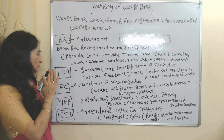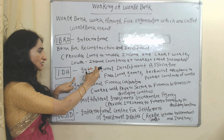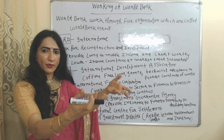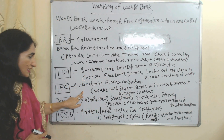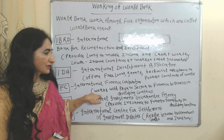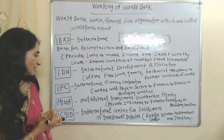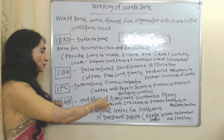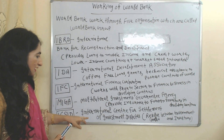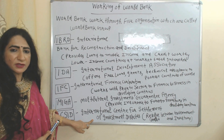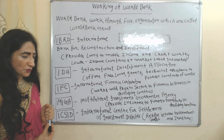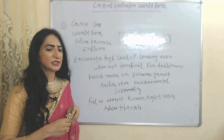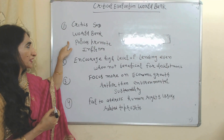Second is the International Development Association, which offers free loans, grants, and technical assistance to the poorest countries in the world. Third is the International Finance Corporation, which works with the private sector to finance businesses in developing countries. Fourth is the Multilateral Investment Guarantee Agency, which provides insurance to foreign investors in developing countries. Fifth is the International Centre for Settlement of Investment Disputes, which resolves conflicts between governments and foreign investors.